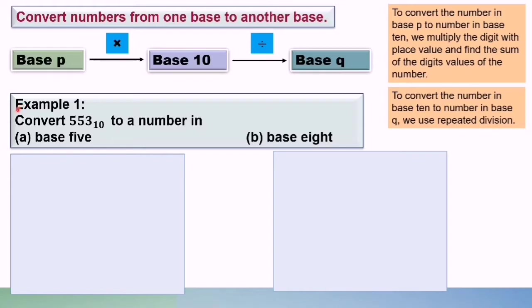Let us look at Example 1. Convert 553 base 10 to a number in base 5. Since we are converting from base 10 to base 5, we need to use repeated division.